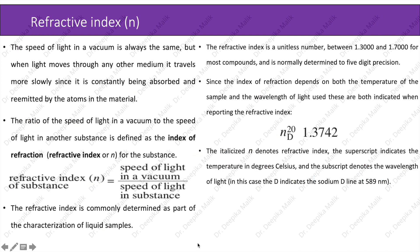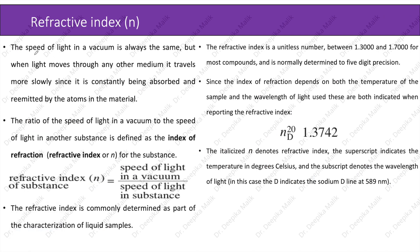Now let us discuss what is refractive index. The speed of light in a vacuum is always the same, but when light moves through any other medium it travels more slowly, since it is constantly being absorbed and re-emitted by the atoms in the material. The ratio of the speed of light in a vacuum to the speed of light in another substance is defined as the index of refraction, or refractive index, for the substance.